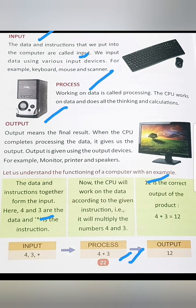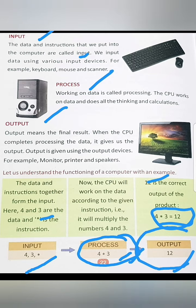12 is the correct output of the process. The result of 4 multiplied by 3 is 12. This is output.